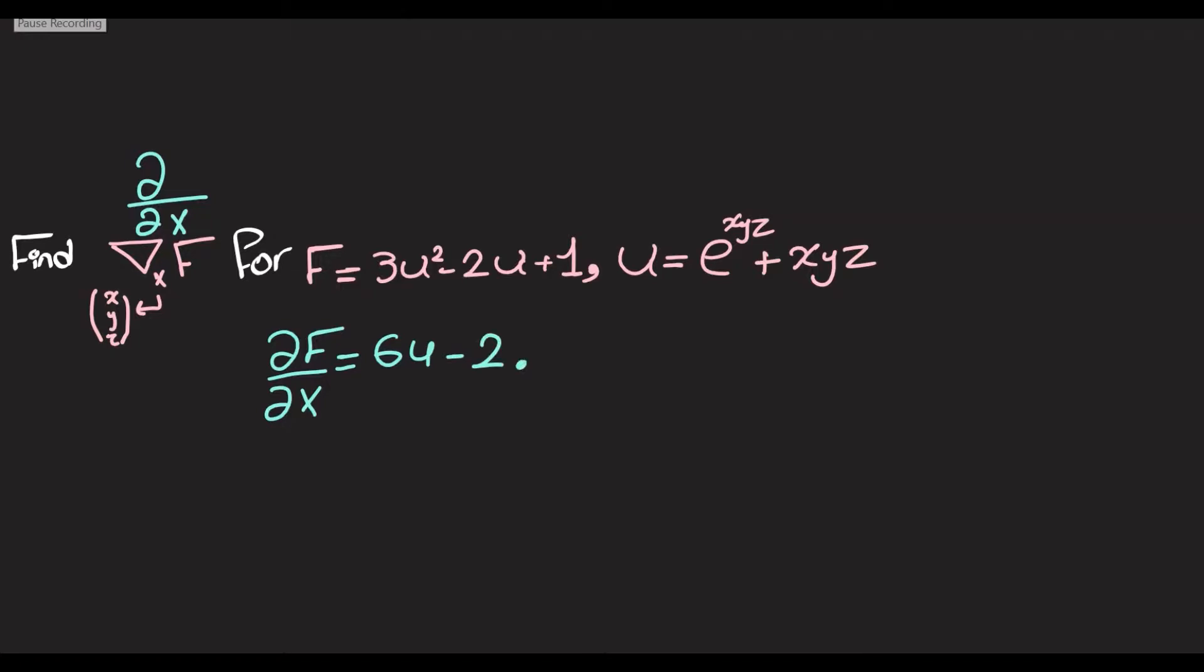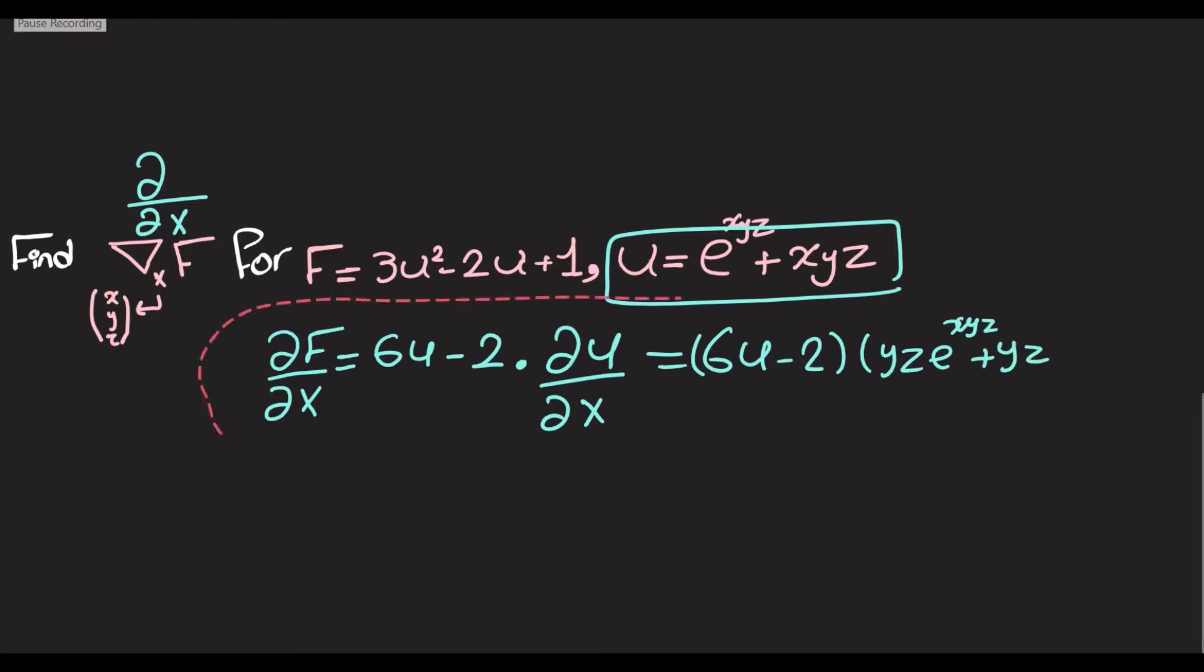And then we multiply that by the derivative of u. So ∂u/∂x. So that is going to be 6u minus 2, and here then we differentiate first with respect to x. So we get yz·e^(xyz) + yz, and then with respect to y.